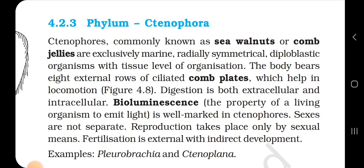4.2.3 Phylum Ctenophora. Ctenophores, commonly known as sea walnuts or comb jellies, are exclusively marine, radially symmetrical, diploblastic organisms with tissue level of organization. The body bears eight external rows of ciliated comb plates which help in locomotion. Digestion is both extracellular and intracellular. Bioluminescence — the property of living organisms to emit light — is well marked in ctenophores. Sexes are not separate; reproduction takes place only by sexual means. Fertilization is external with indirect development. Examples: Pleurobrachia and Ctenoplana.